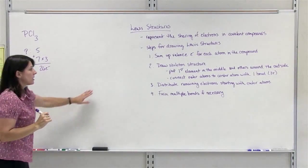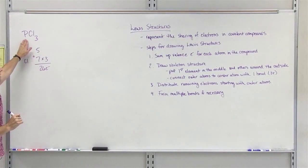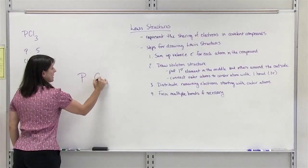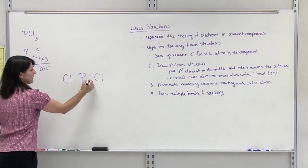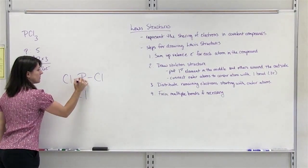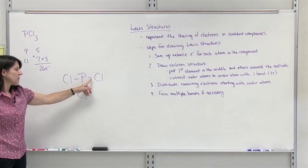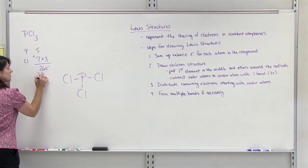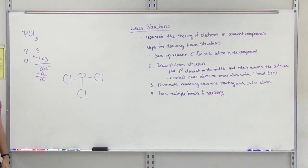Step 2: draw our skeleton structure. The first atom, phosphorus, goes in the center. The remaining chlorine atoms go around the outside; connect each of them with a bond. Each bond represents 2 electrons, so we have used 2, 4, 6 electrons. Subtracting from our total, we have 20 electrons left to distribute.